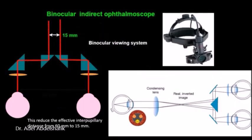Prisms are used as shown in the diaphragm. This will reduce the effective interpupillary distance from 60 millimeters to 15. This allows the source of light and the two lines of sight of both eyes to get access into the patient through the patient's pupil and this allows binocular vision.